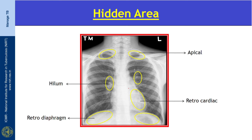After completing the interpretation, we have to check whether we have reviewed all the hidden or review areas. These important areas are: the apical area, hilum, retrocardiac area, and retrodiaphragmatic area. Any pathology in the left posterior lobe can be seen in the retrocardiac area. For example, apical lesions — we have to concentrate on the apical area; and any opacity in the retrodiaphragmatic area could be due to lower lobe consolidation.